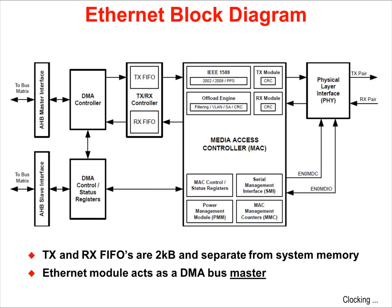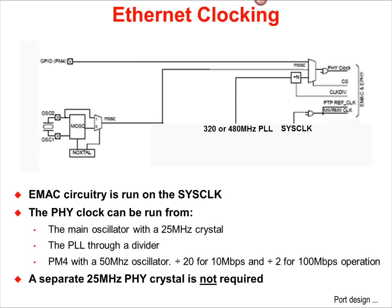Note the separate DMA controller and the transmit and receive FIFOs. These FIFOs are 2KB deep and are separate from the system memory. The Ethernet module circuitry is run on the system clock, the same one as the CPU.